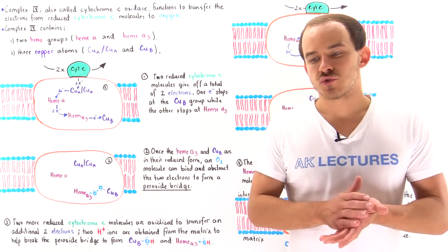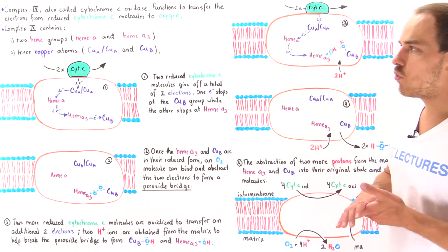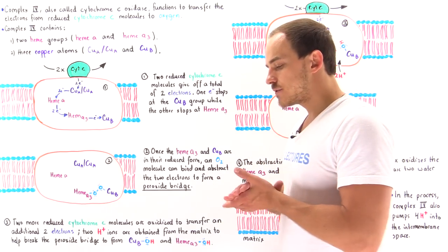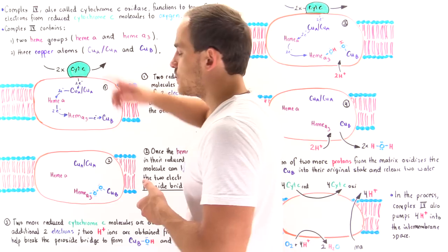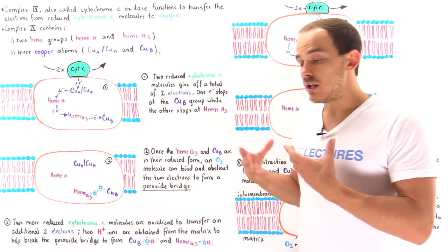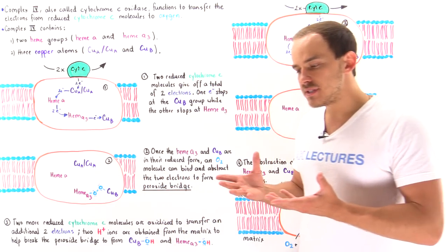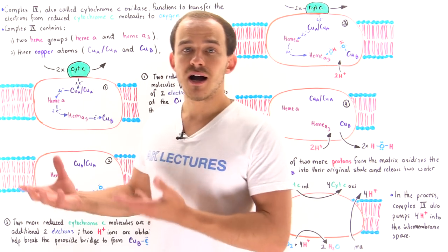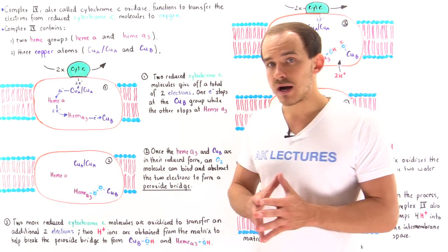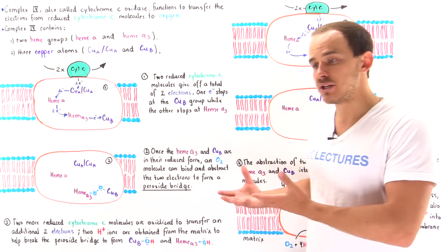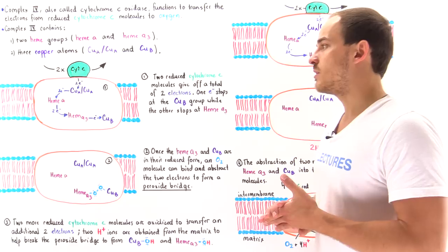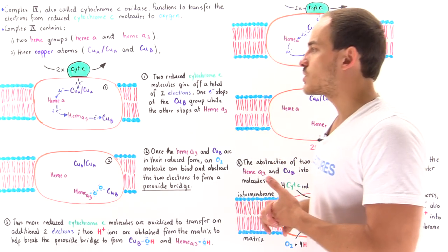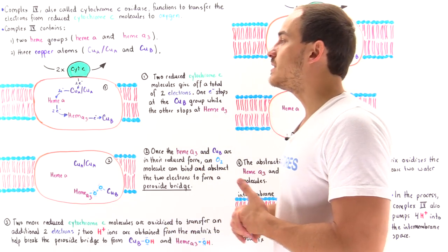The final complex of the electron transport chain is Complex 4, also known as cytochrome C oxidase. Along Complex 4, electrons are transferred from cytochrome C molecules onto oxygen to generate water molecules, and it helps establish a proton electrochemical gradient that will be used by ATP synthase to generate high-energy ATP molecules.